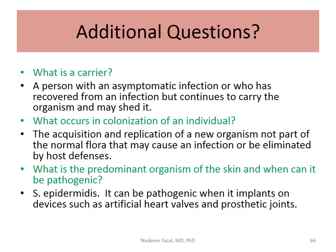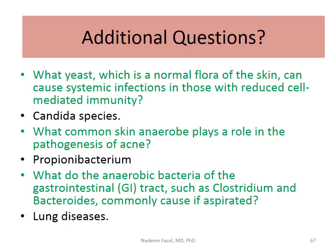What is the predominant organism of the skin and when can it become pathogenic? S. epidermidis — 'epidermidis' means skin — can be pathogenic when it plants on devices such as artificial heart valves and prosthetic joints. What yeast is a normal flora of the skin that can cause systemic infection especially if you have impaired cell-mediated immunity? Yes — Candida. What is the common cause of anaerobic pathogenesis of acne? Propionibacterium.